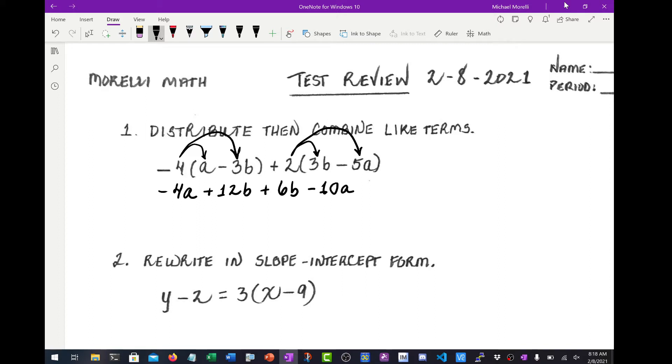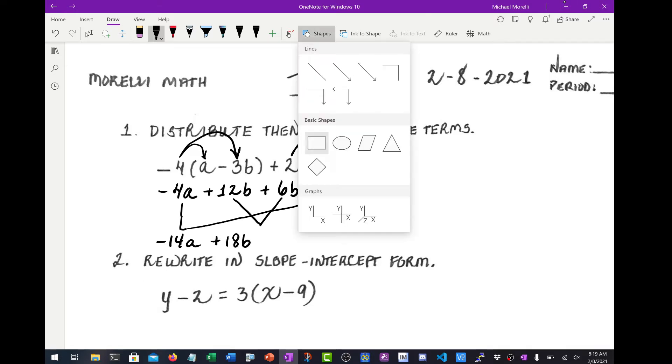So now it's the combine like terms part of the problem. First we're going to combine our A terms. I like to draw these lines - it makes it a little bit easier to know what you're combining. So it's like negative 4A minus 10A is negative 14A, because it gets bigger in the negative. Then we combine the B terms just like this. We've got 12B plus 6B, that's 18B plus 18B. And that's the answer. We'll put a box around it.